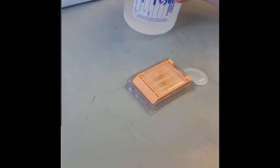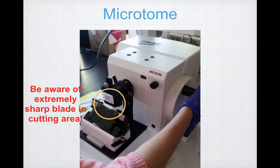After you've finished pouring your paraffin, you can let it cool on the countertop for about 30 minutes. Then properly label your specimen with your group name and date, and place it in the refrigerator until the next step. Once your block is finished, you're ready to start sectioning.